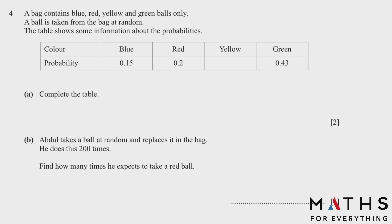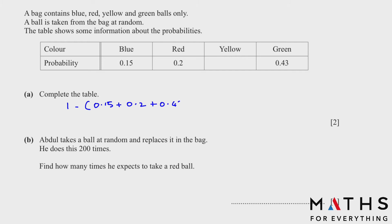Question 4 is a probability question. A bag contains blue, red, yellow, and green balls only. A ball is taken at random. The table shows some probabilities; yellow is missing and we need to complete the table. Since all probabilities must sum to 1, we subtract the three known probabilities from 1 to find the yellow probability, which gives us 0.22.